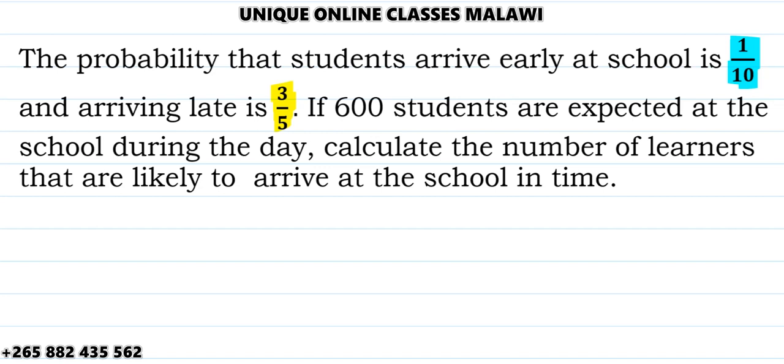Solution: According to the question, we have three categories. Early, whose probability is 1 over 10. Late, with probability 3 over 5. And on time, which we need to find.